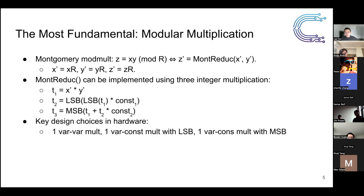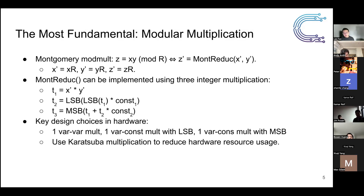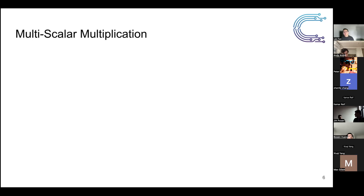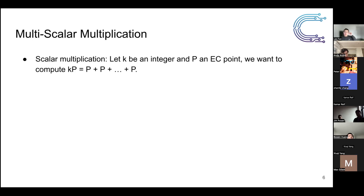Key design choices in hardware: we care about three multiplications — variable×variable, variable×constant, and variable×constant with MSB output. We use Karatsuba multiplication to reduce hardware resource usage. We tried Toom-Cook as well, but ultimately Karatsuba achieves the best performance for our current parameters. For FPGA implementation, we use NARC to reduce DSP usage in the variable×constant multipliers.